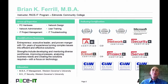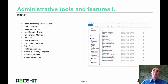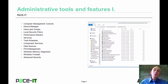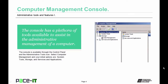I'm Brian Farrell, and welcome to PACE IT's session on Administrative Features and Tools, Part 1. Today we're going to discuss quite a few administrative tools and features. We're going to begin with the computer management console — it has a lot of useful features and is used to assist in the administrative function of a computer. It's available through the control panel under the Administrative Tools icon; select Computer Management to open it. Once there, you have access to system tools, storage tools, and service and application tools.